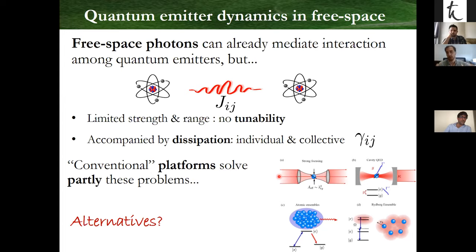Also in cavities, by confining light to a small volume, you can naturally increase light-matter interactions. But you don't have full flexibility to engineer interactions that you might want for quantum simulation to simulate complex models in many-body physics.